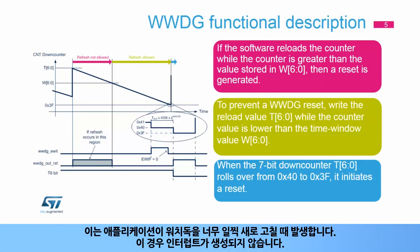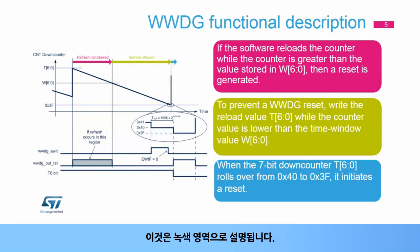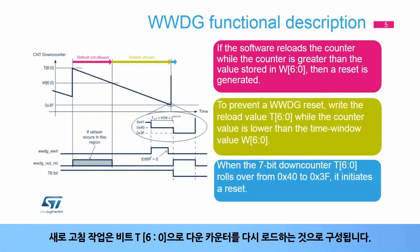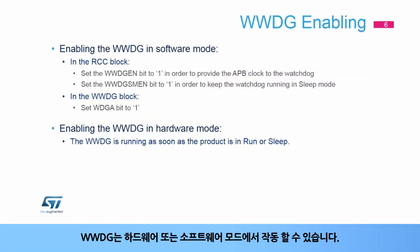This happens when the application refreshes the watchdog too early. No interrupt is generated in this case. To prevent a window watchdog reset, the watchdog refresh must happen while the down counter value is lower than the window value and greater than 0x3F. This is illustrated by the green area. The refresh operation consists of reloading the down counter with bits T[6:0].